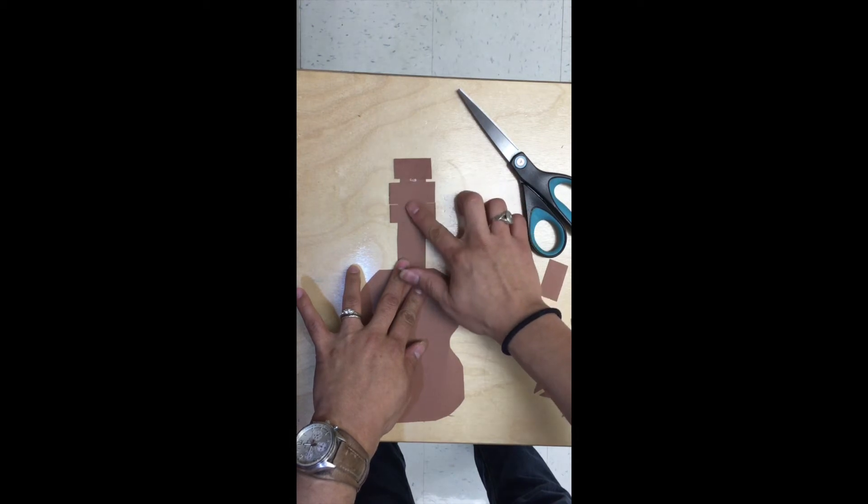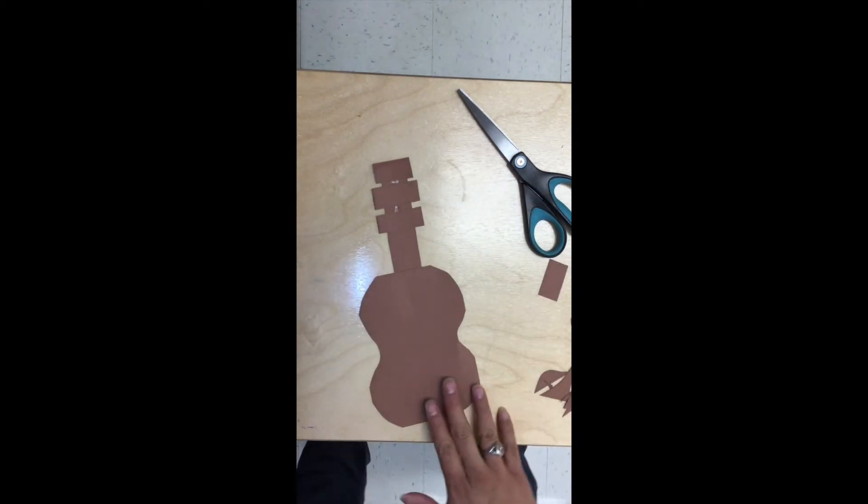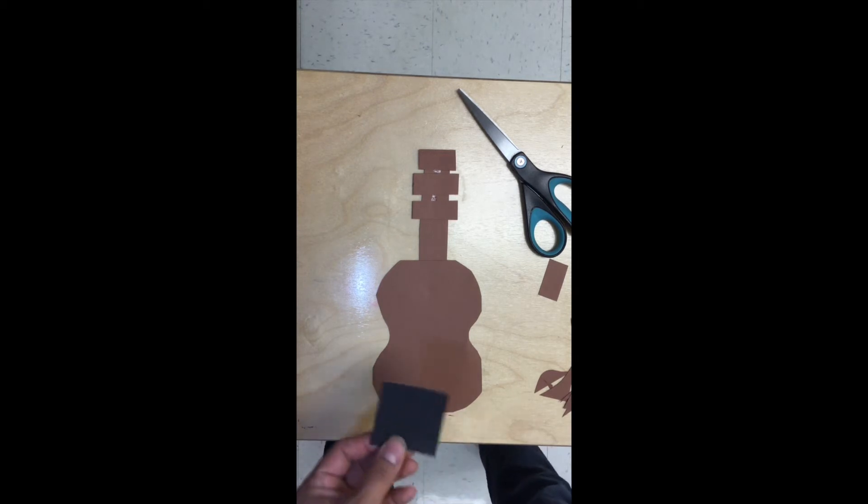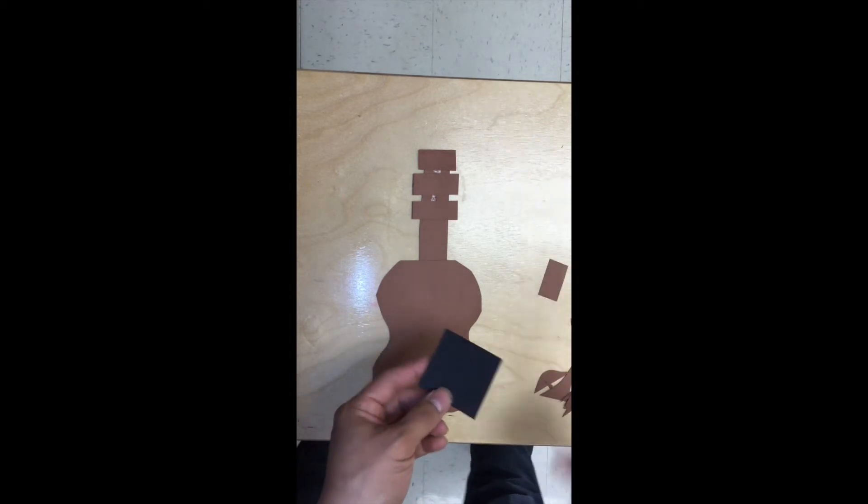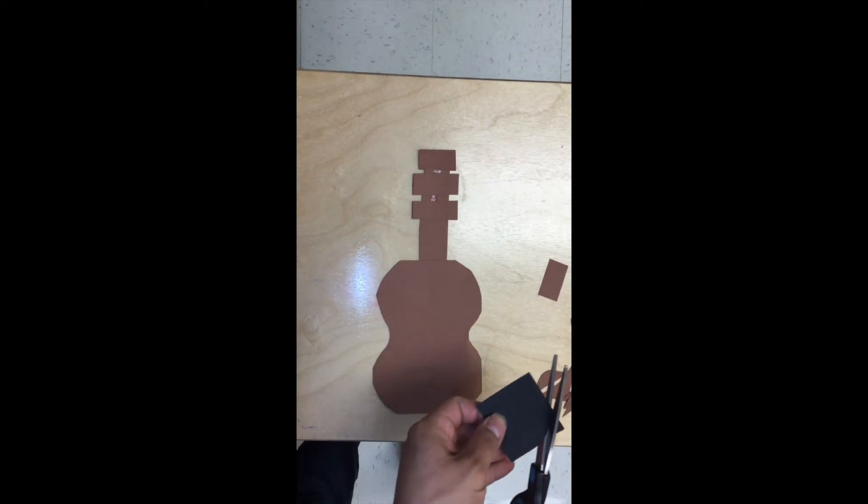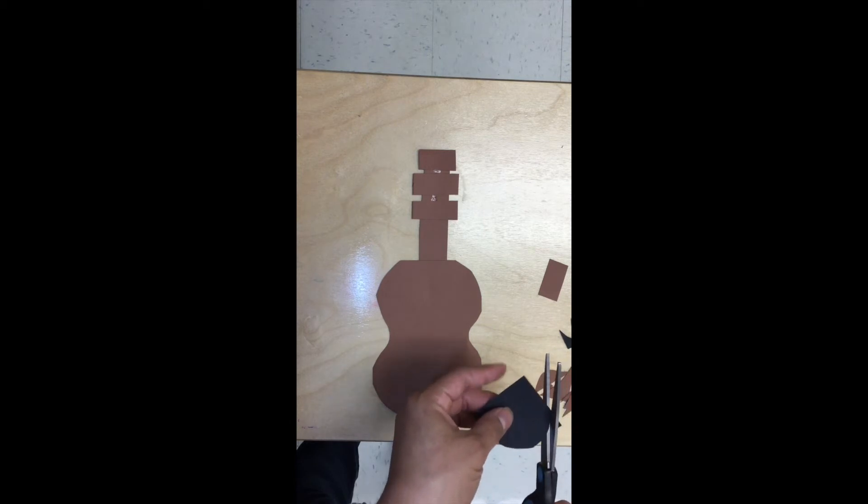Just like that. Now for the sound hole, we are actually going to take a black square and just like before, we are going to cut the corners off of that square so it becomes a nice round circle.